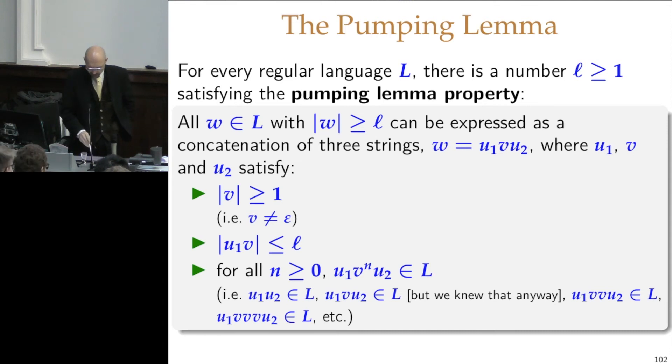All strings in L which are longer than or equal to ℓ can be expressed as a concatenation of three strings. W is a first part called u₁, a middle part called v, and a second part, a third part called u₂, where v is not empty, the combination of u₁ and v is not exceeding ℓ, and the way that I pump up the string is I repeat v zero or more times. So all these strings, the pumping lemma says, will be in the language.